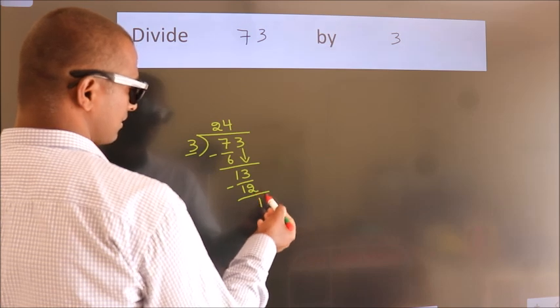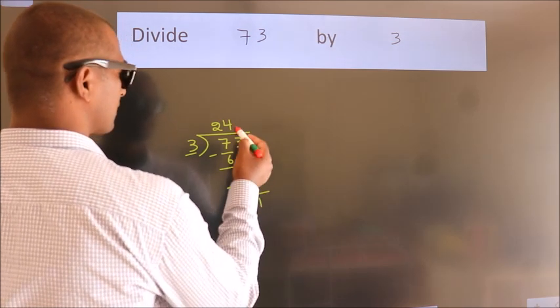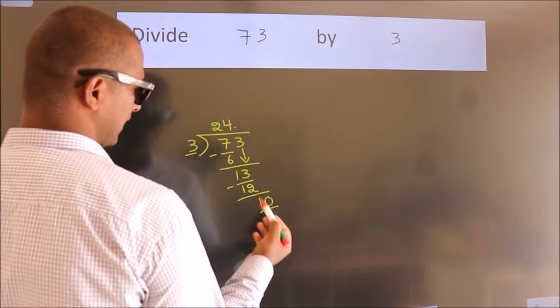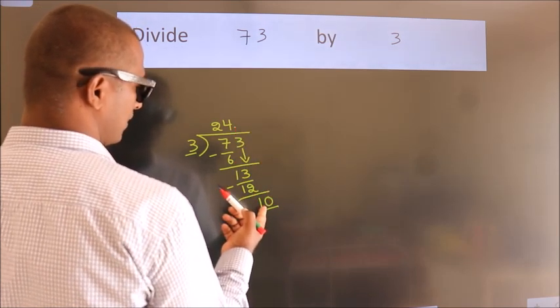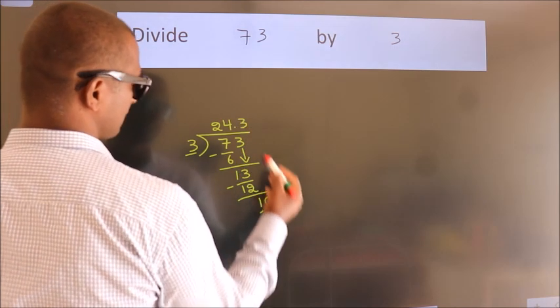After this, no more numbers to bring down. So what we do is put a dot and take 0. So, 10. A number close to 10 in the 3 table is 3 times 3 equals 9.